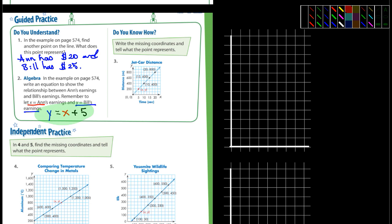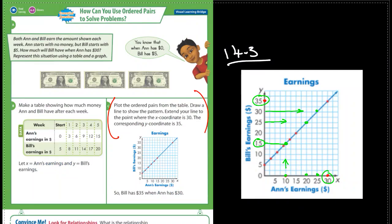So if you think about that equation for a moment, y is representing Ann's earnings and x is Bill's earnings. And Ann's earnings is the same as Bill's plus five. And we could go back to the graph and you could see that whatever Ann had, Bill had five dollars more.